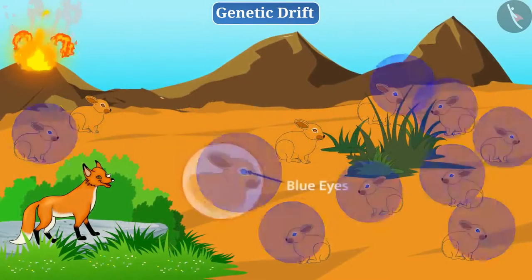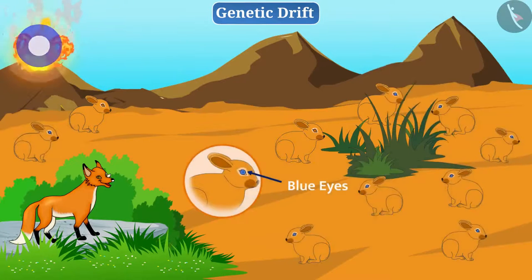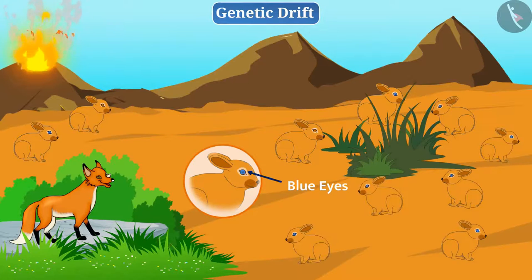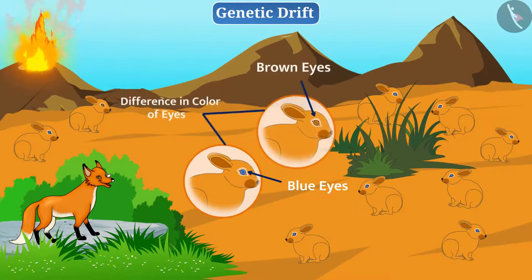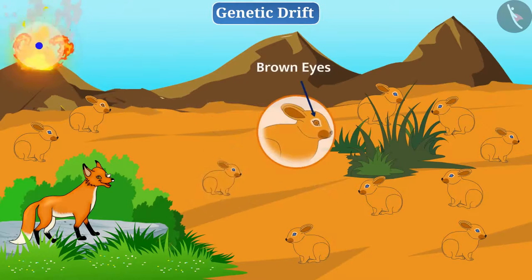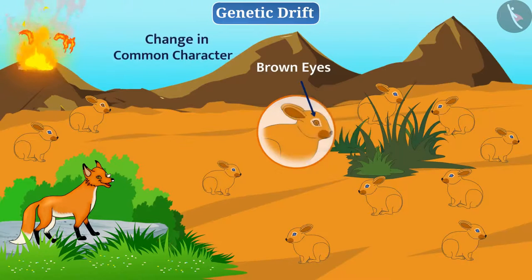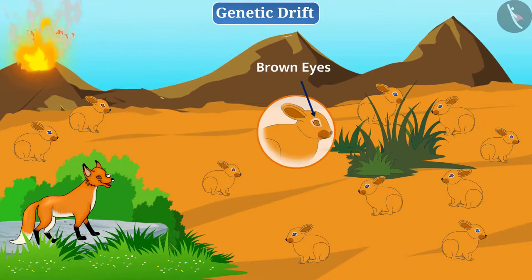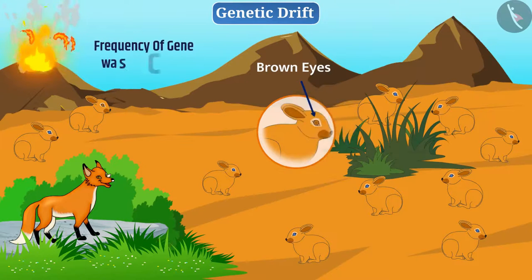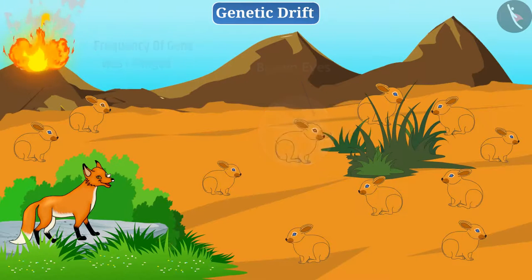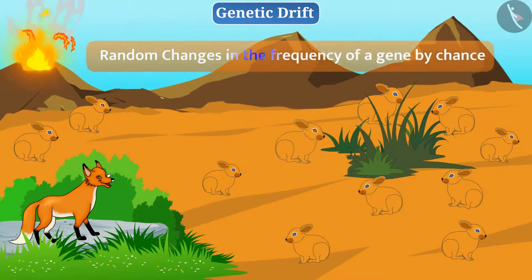Here, the accident coincidentally allowed few blue-eyed rabbits to survive and rebuild the population. In this situation, the difference in the colour of the eyes did not help in survival. Due to the accident, there was a change in the common character of eye colour, i.e., brown. In other words, due to the accident, the frequency of genes of brown colour was changed. Random changes in the frequency of a gene, by chance, is called genetic drift.